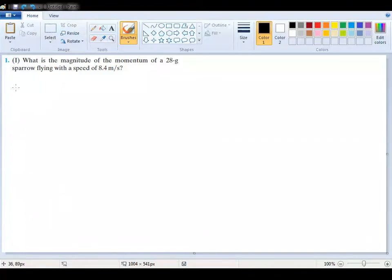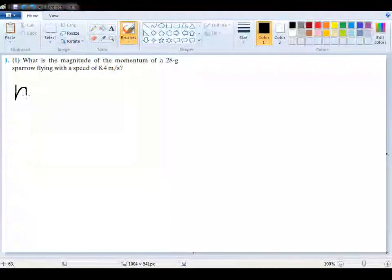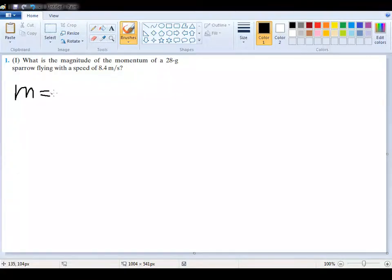Alright, so what I like to do first when I'm answering a question is to list out the variables that I'm given, which usually makes things a little bit easier for me to have everything listed out right from the start. So right now, all we're given is that it has a mass of 28 grams and a speed of 8.4 meters per second.